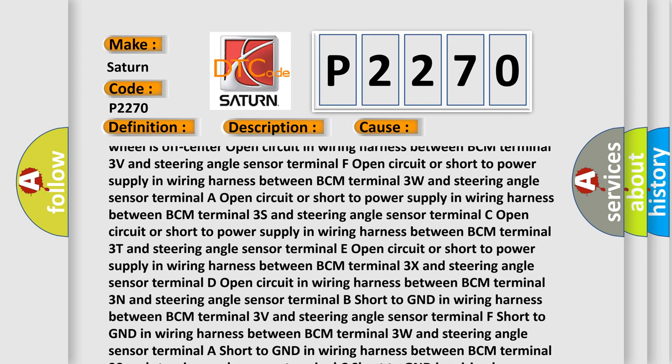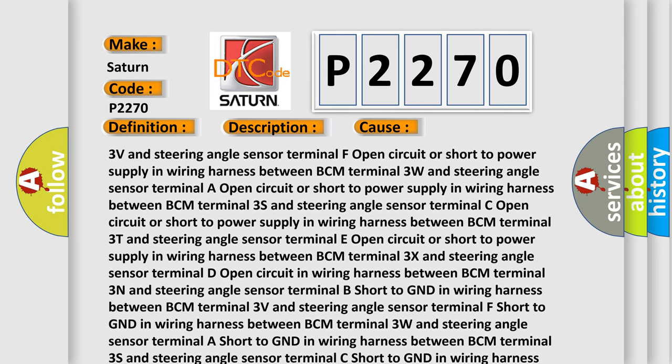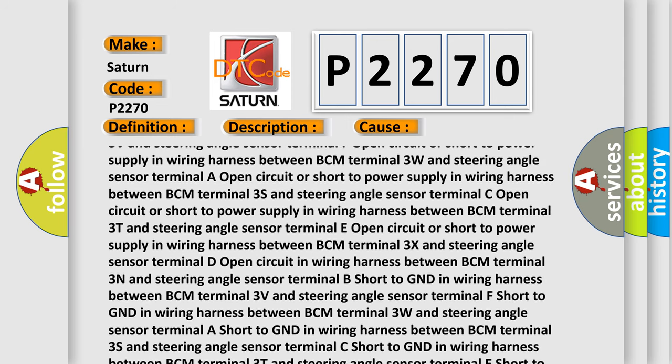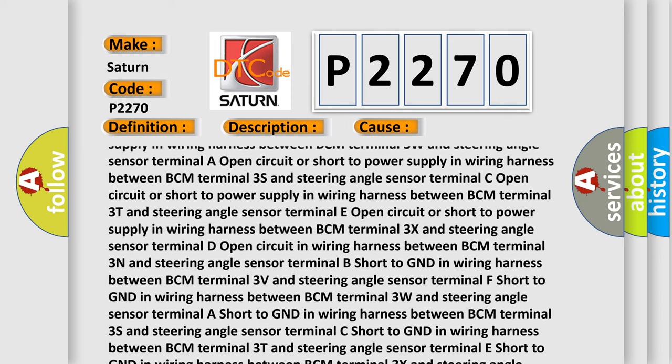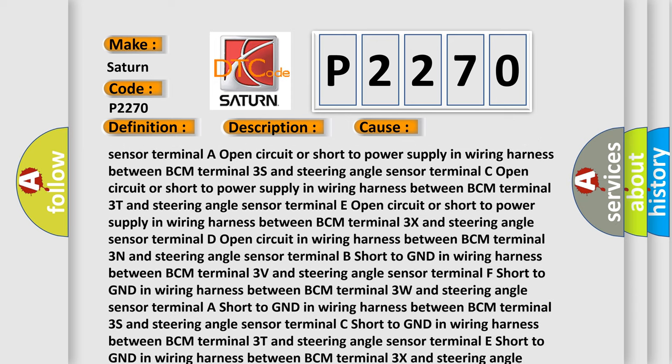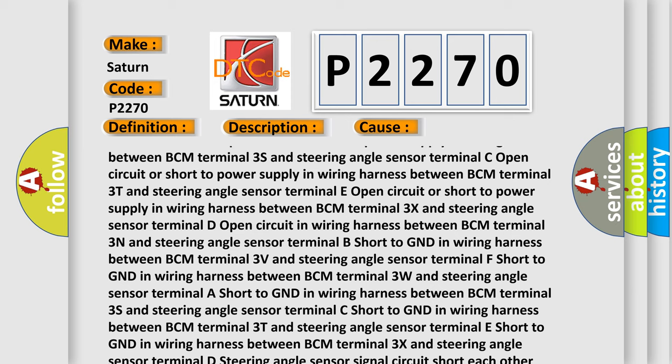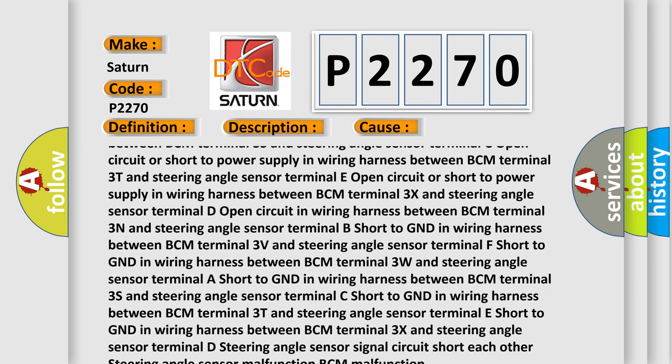Open circuit or short to power supply in wiring harness between BCM terminal 3T and steering angle sensor terminal E; open circuit or short to power supply between BCM terminal 3X and sensor terminal D; open circuit in wiring harness between BCM terminal 3N and steering angle sensor terminal B.